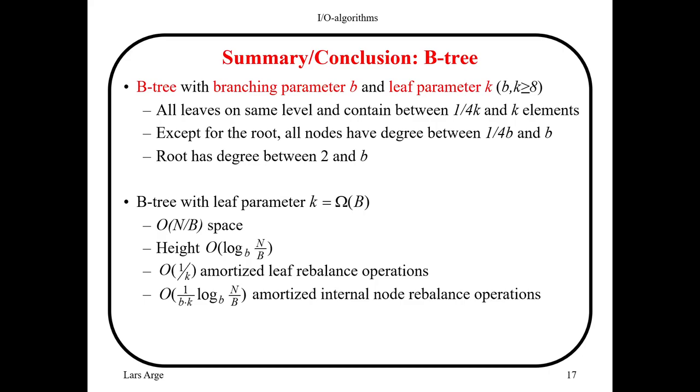Let's review what we learned about B-trees so far. B-trees are essentially AB-trees, but one thing that we can tweak is that we can have different branching parameters for the internal nodes and the leaves. Typically we would think of them as being the same, but later on we're going to set them to different values.